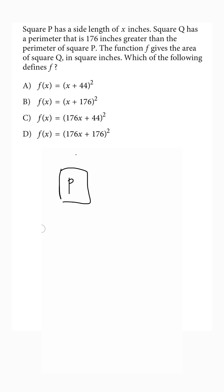Let's begin by drawing square P. We know it has a side length of x, and therefore the perimeter is 4x.